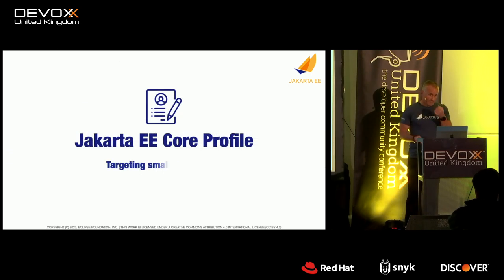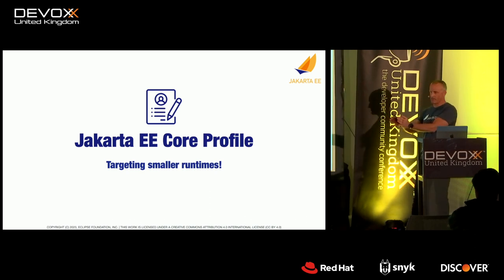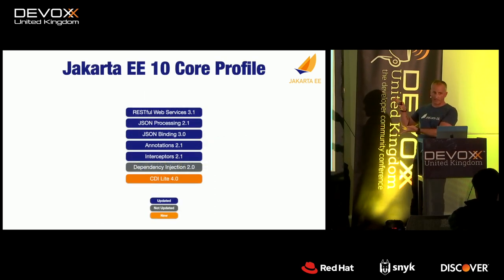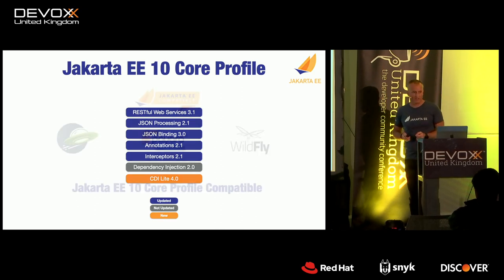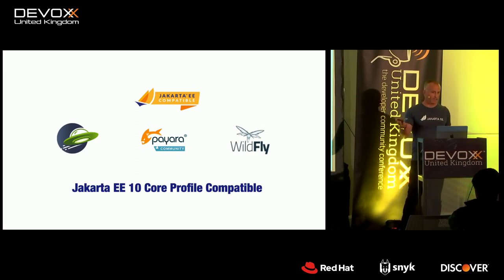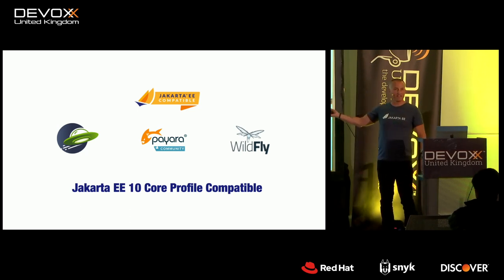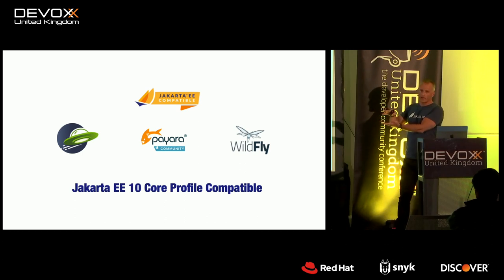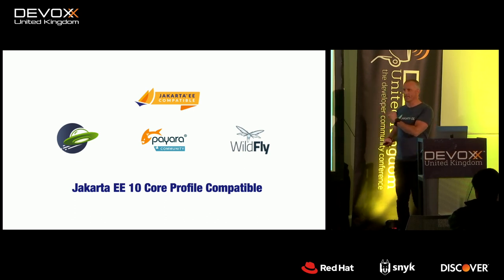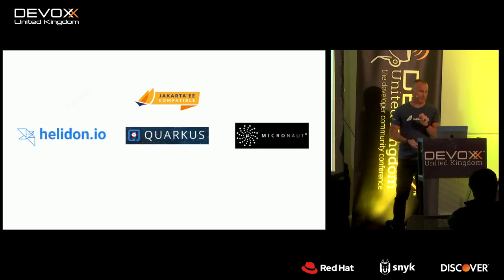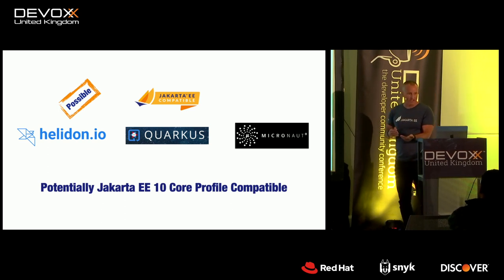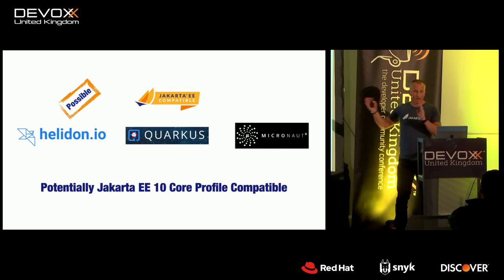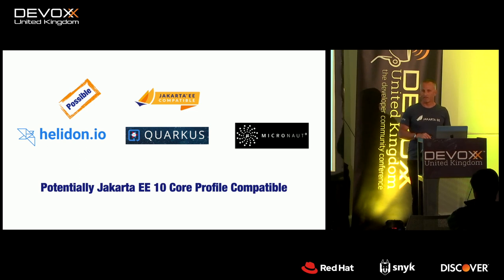The Core Profile is created to target smaller runtimes. You've seen the smallest thing you can do with the SeBootstrap API, but the Core Profile is the set of specifications to create microservices. Today we have three compatible products for Core Profile: OpenLiberty, Payara, and WildFly. These are regular application servers but they can use their module systems to be squeezed down smaller. However, the runtimes we actually had in mind are frameworks like Helidon, Quarkus, or Micronaut — both Quarkus and Helidon should be fairly close to being able to certify as Core Profile compatible.